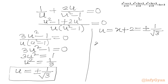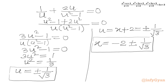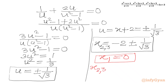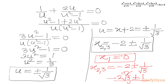Now we subtract 2 from both sides since u equals x plus 2. We get x equals negative 2 plus or minus 1 over square root 3, which can also be written as (negative 2 times square root 3 plus or minus 1) over square root 3. So we have two more real solutions x₂ and x₃. Overall, the three real solutions are x₁ equals 0 and x₂,₃ equals negative 2 plus or minus 1 over square root 3.